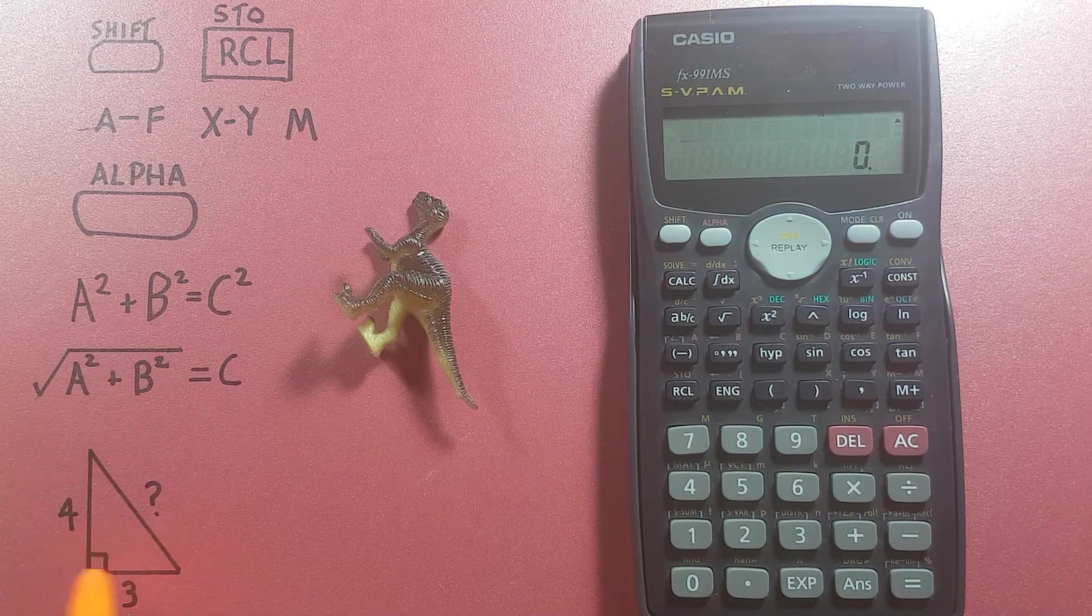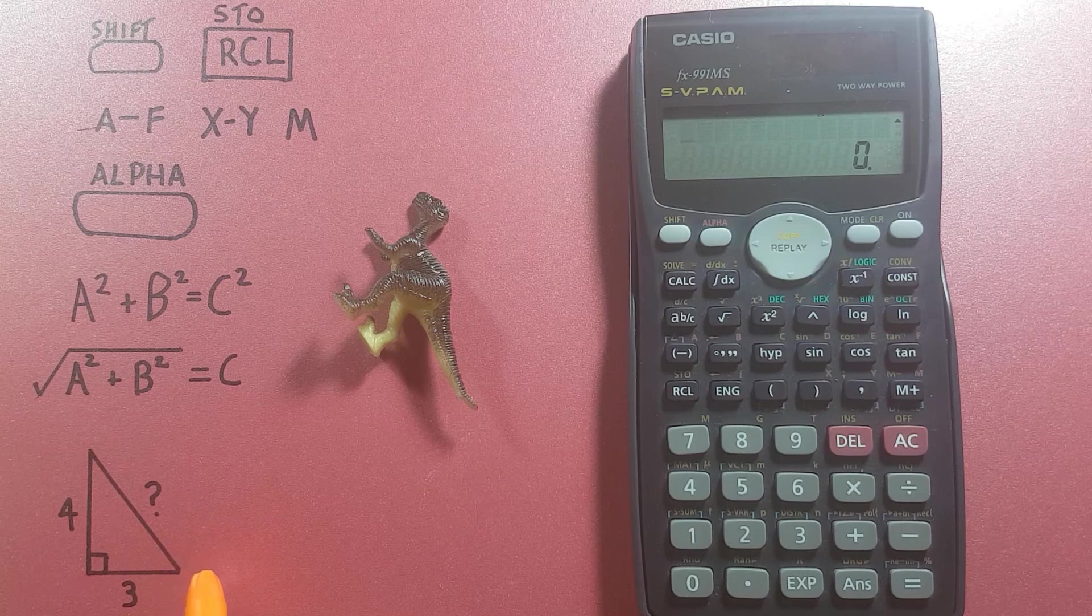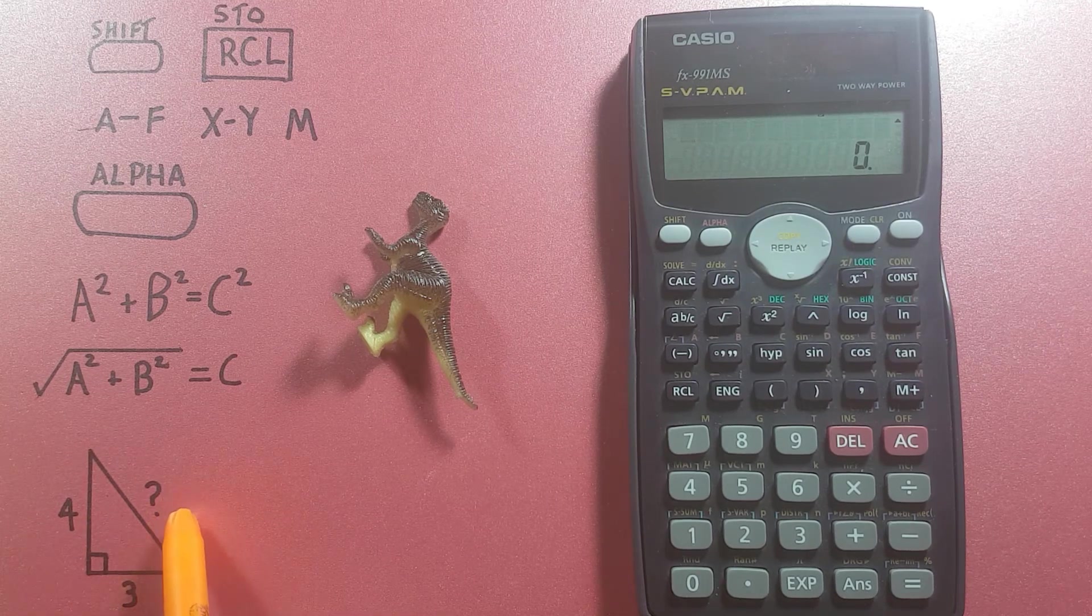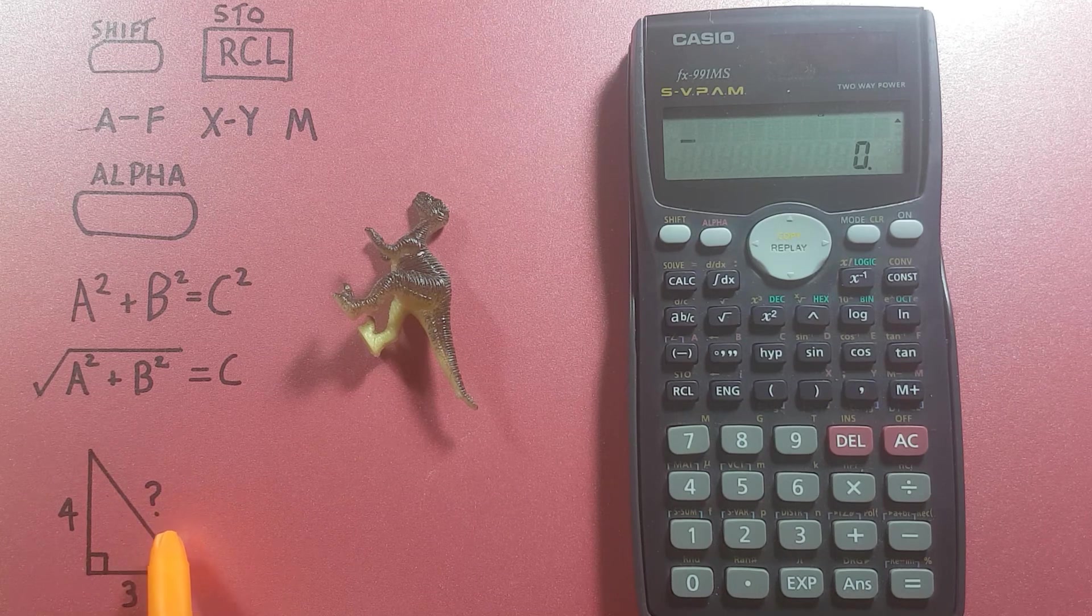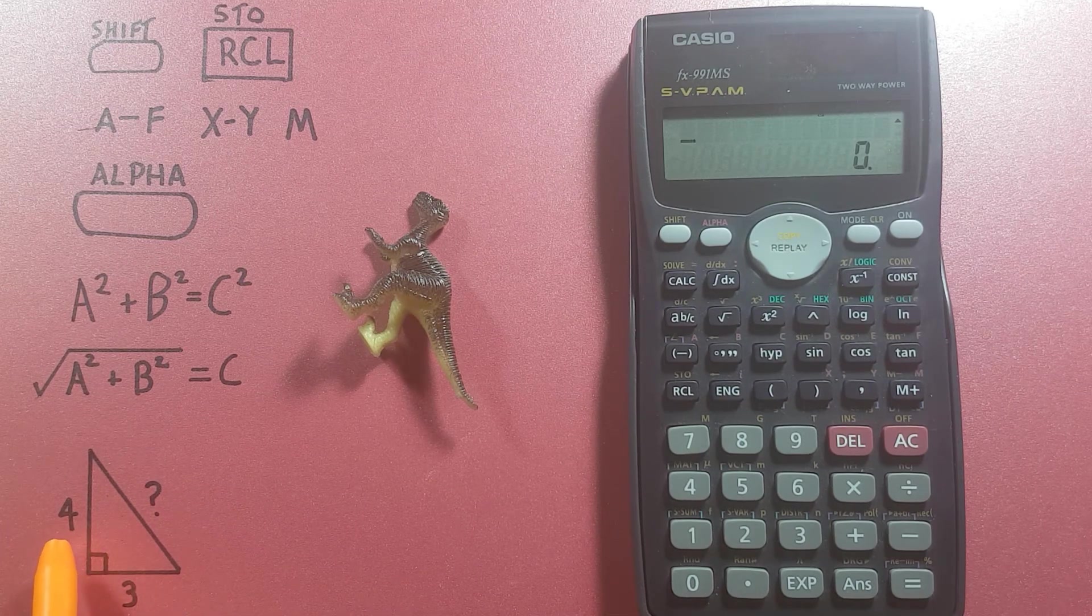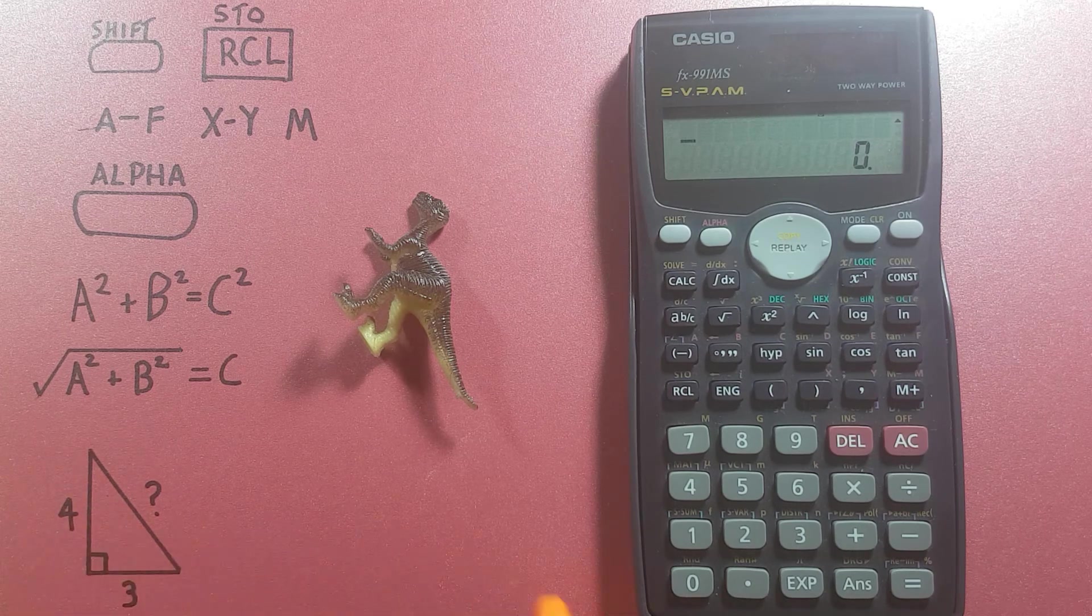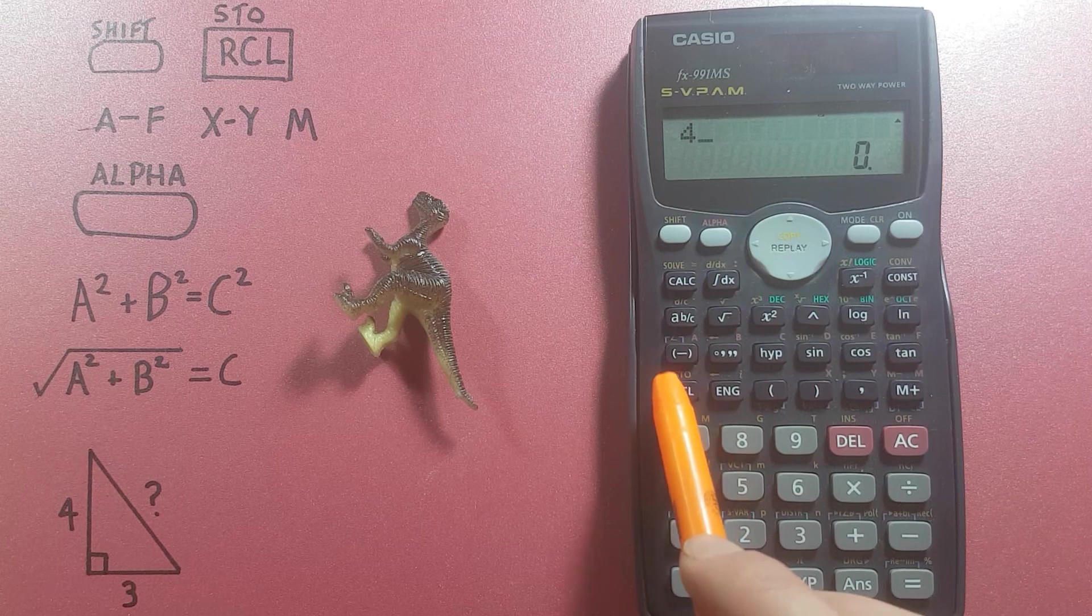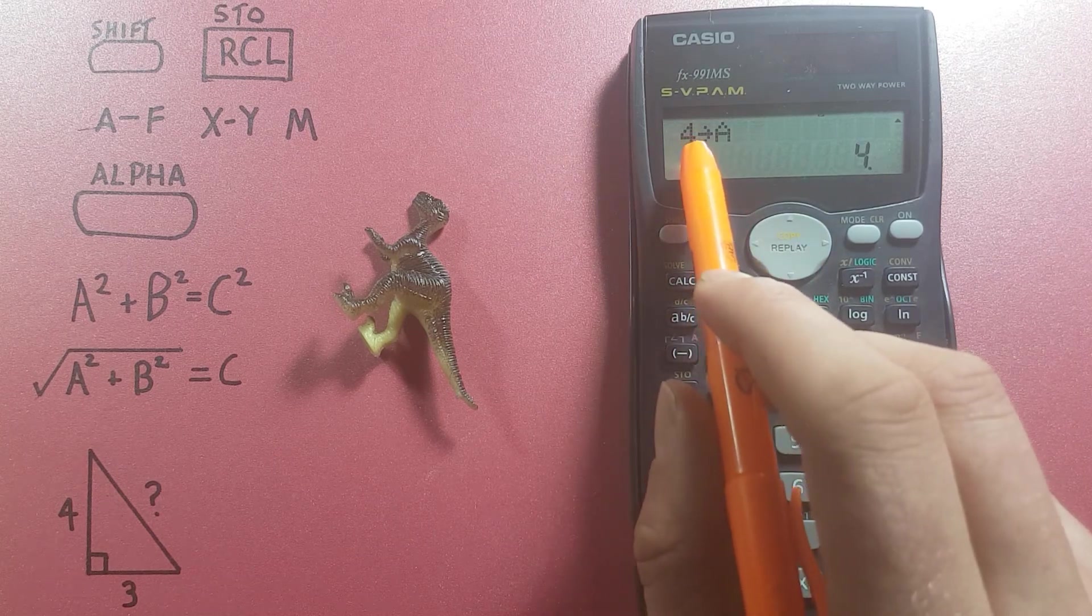Let's say we wanted to solve this triangle here which has an a side of 4, a b side of 3 and an unknown c side that we're trying to solve. Well we could save the a side of 4 into our a slot, place it on the screen, shift store a, there we go 4 into a.